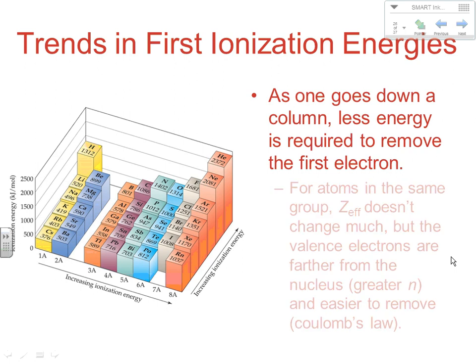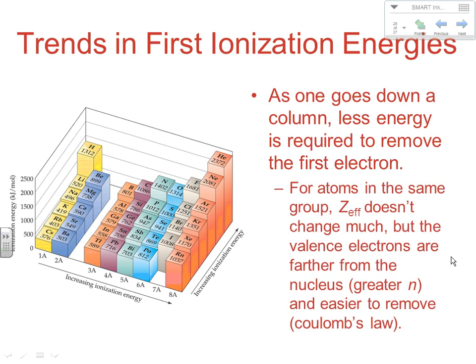As you go down a column, less energy is required to remove the first electron. Atoms in the same group — effective nuclear strength doesn't change much. What's going on when going down is a much greater distance from the nucleus. Greater N means it's easier to remove those electrons based on Coulomb's Law. As you get farther from the nucleus, the nucleus has a weaker hold on you. Distance kills attractive forces by Coulomb's Law, so it gets easier to remove electrons. When you go down, increasing N makes it easier to remove electrons. As you go across, it generally gets harder because effective nuclear strength increases going left to right.